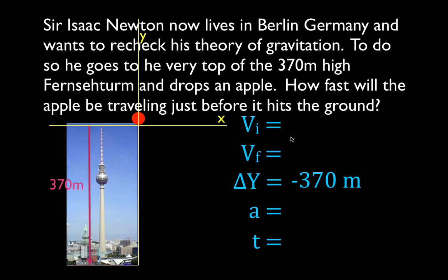Now, it doesn't say this explicitly, but because this is a freefall problem, we know that the initial velocity, when Isaac is up there holding the apple, the initial velocity is 0 meters per second. And we know the acceleration, which is a vector and also points downward in this case, is minus 9.81 meters per second squared. That is the acceleration due to gravity on Earth. We are looking for the final velocity, and we're not given the time, so we don't need that.